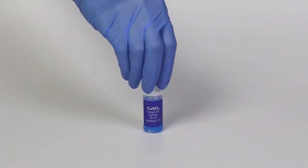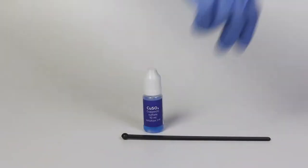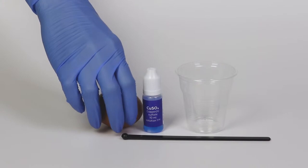For the protein slime experiment, you will need the copper sulfate solution and a plastic stirring rod. From the starter kit, you will need a disposable cup. You will also need an egg and a napkin or paper towel.